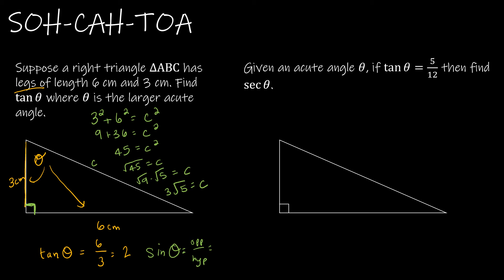If I needed to find sine of theta, I would take the opposite side of 6 over 3 radical 5. I would reduce to 2 and to 1, and then I would rationalize the denominator because we never keep a radical in the denominator. That would give me 2 radical 5 over 5. So that would be sine of theta.